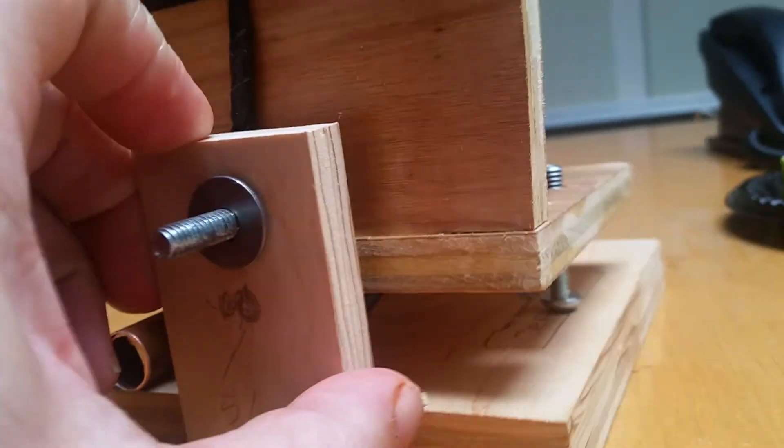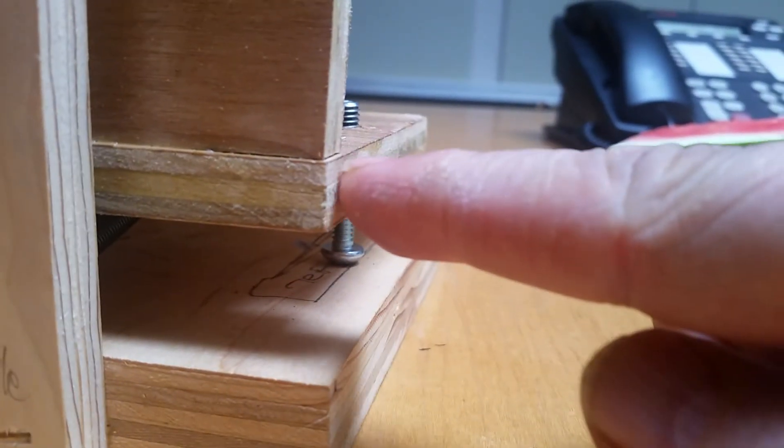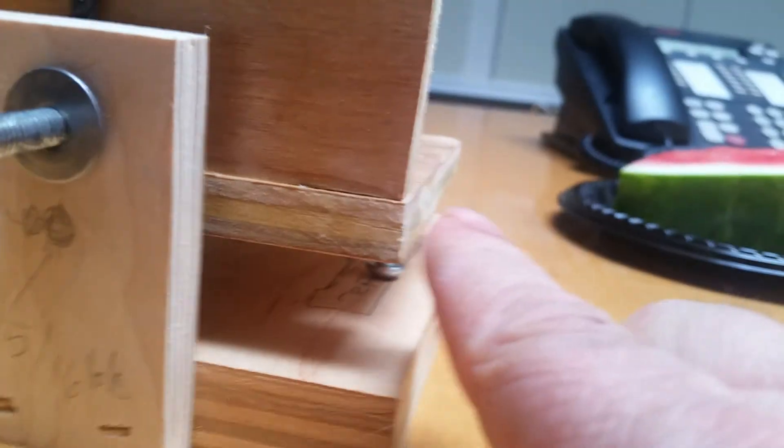What I didn't do is put the digital indicator on here. You need to get a piece of a little angle of aluminum right here. Put it out here like this. And your digital indicator goes out here like that.